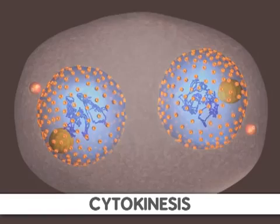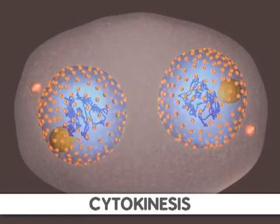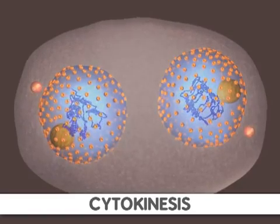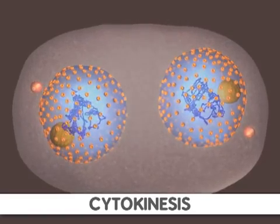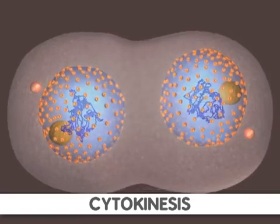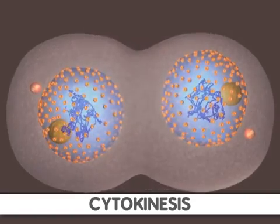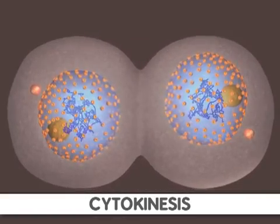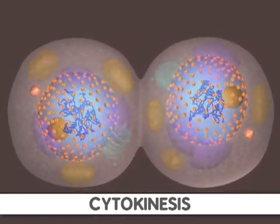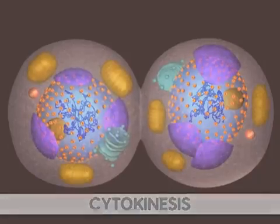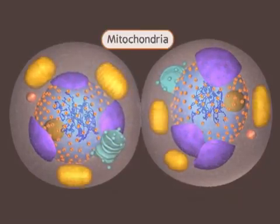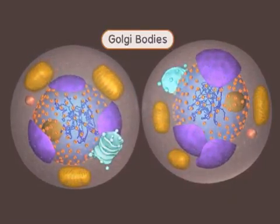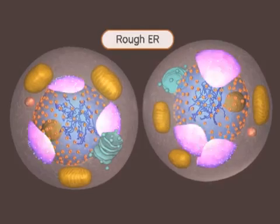First, the cell is compressed by a contractile ring that divides the cell in nearly equal halves. By now, the organelles in the cell have been replicated and are now divided between the two halves of the cell. This includes mitochondria, Golgi bodies, and the rough ER.